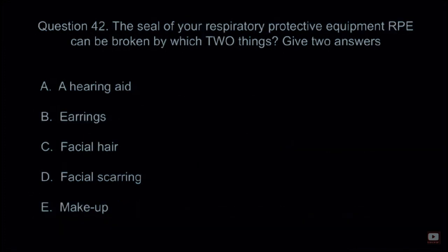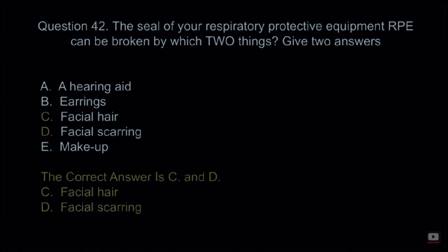Question 42: The seal of your respiratory protective equipment (RPE) can be broken by which two things? Give two answers. A: A hearing aid. B: Earrings. C: Facial hair. D: Facial scarring. E: Makeup. The correct answers are C and D — facial hair and facial scarring.